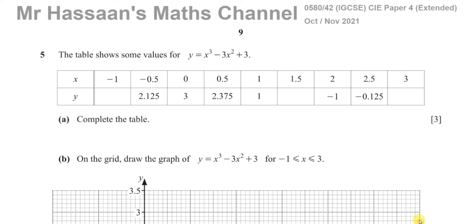Welcome back to Mr. Hassan's Maths channel. This is question number 5 from the IGCSE Cambridge paper for extended October 2021 session. This question is about graphs or functions. We're given a cubic curve which we have to plot, and there are some missing values in the table. We can just substitute the x values into the equation and write down the missing values.